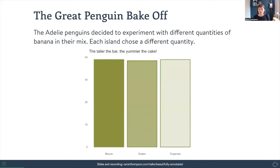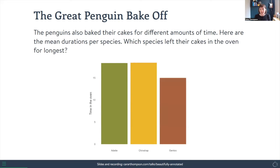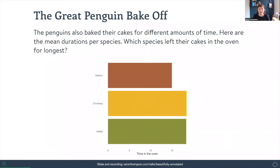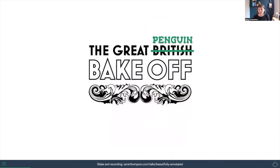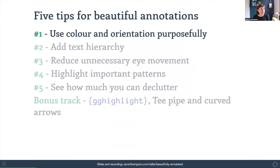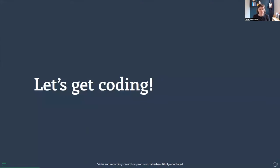Just by changing the colours you can fairly easily guess which species got the underripe green bananas and which got the ripe or overripe ones. The Adélie penguins mixed things up with different quantities of green banana, and again just by changing colours you can get a rough idea of which island went for which quantities. Finally, if I ask which species left the cake in the oven the longest, you might start tilting your head — and if you ever find yourself doing that, consider flipping the plot. Duration runs left to right and is easier to conceptualize that way. The point is: use colour and orientation purposefully.